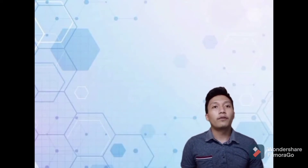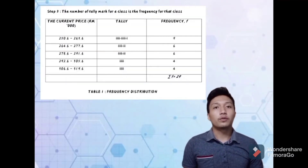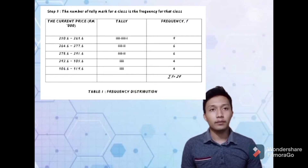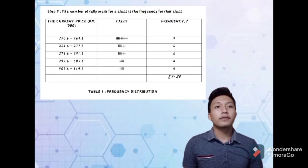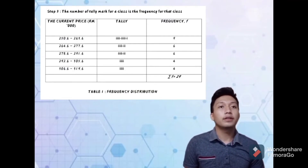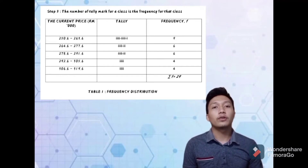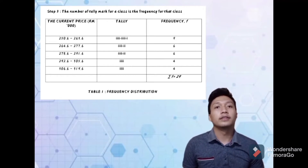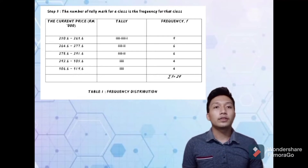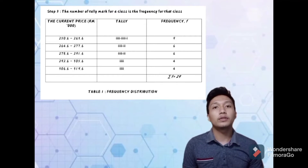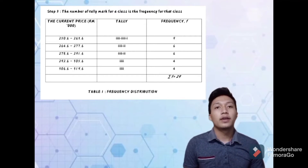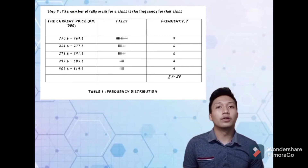For the last step, the number of tally marks for a class is the frequency for that class. The table shows the frequency distribution. By referring to the table, we can get the frequency for every class. After totaling up the frequency, we should get the same value as our sample size, which is 29. If we don't get 29, it means our frequency is wrong.